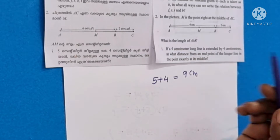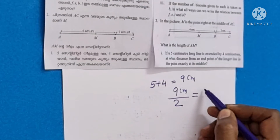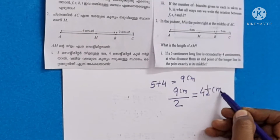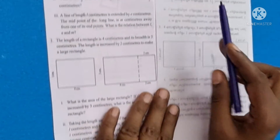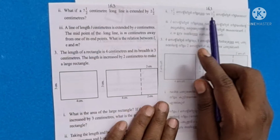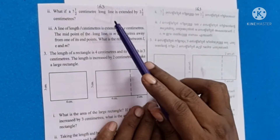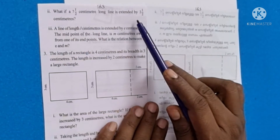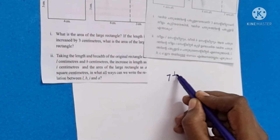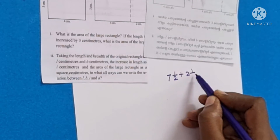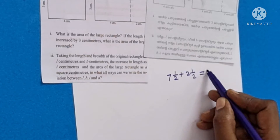This is the distance to the middle point. The length of AM is equal to 4.5 centimeters — that is the midpoint distance from the endpoint of the longer line.